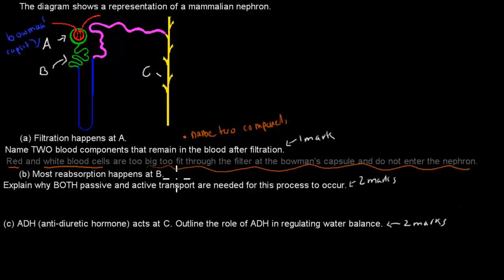This part here you probably didn't have to write because it says name, but I wrote it anyway just to finish the sentence. You can use that as a bit of revision as well. So we have small things passing through that filter, but the big things can't fit. You get one mark, so half a mark for red and half a mark for white blood cells.